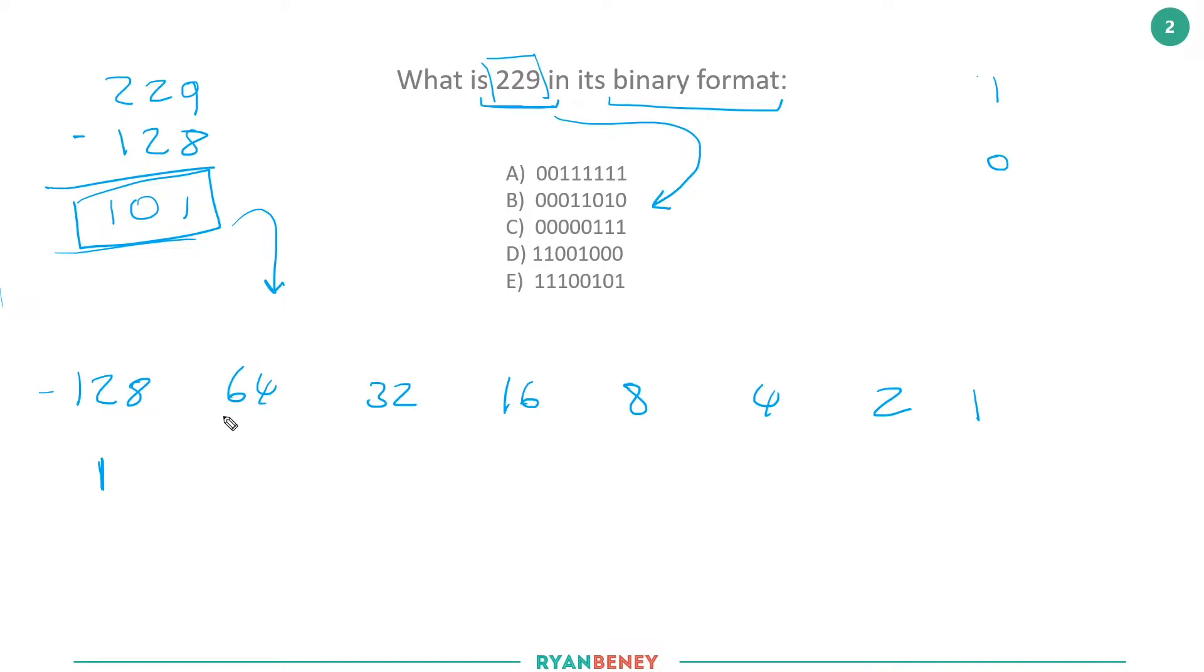We move to the next number. Does 64 fit into 101? Yes, it does. Take away 64, we get 37. Does 32 fit into 37? Yes, take away 32, we're left with 5. Now it changes: does 16 fit into 5? No. Does 8 fit into 5? No. Does 4 fit into 5? Yes. Take away 4, we're left with 1.